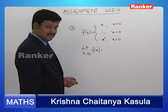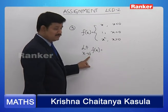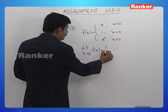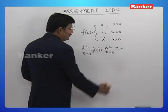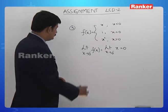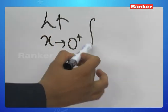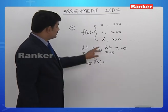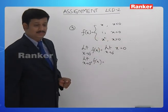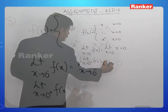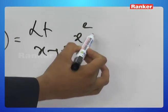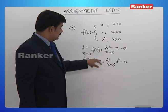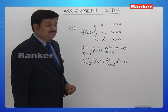For the left-hand limit, limit extending to 0 minus f(x): when x is slightly less than 0, f(x) is defined as x. So this is limit extending to 0 minus of x, which equals 0. For the right-hand limit, limit extending to 0 plus f(x): when x is slightly greater than 0, f(x) is defined as x². So this is limit extending to 0 plus of x², which is also 0. Since both limits are equal to 0, the answer is 0.